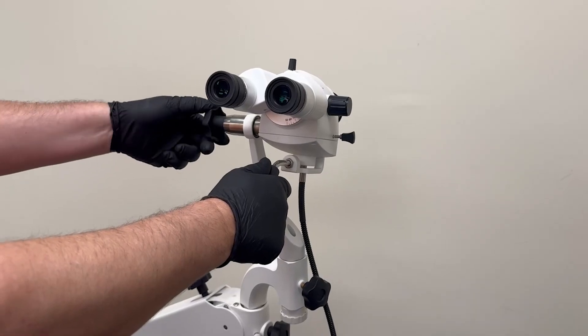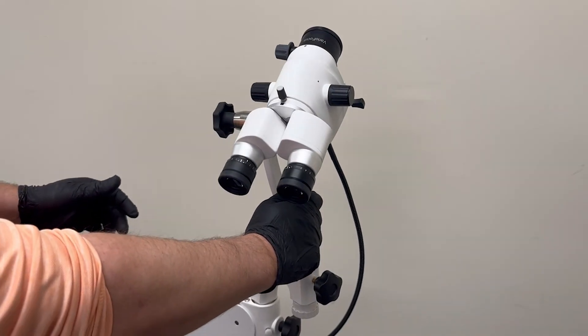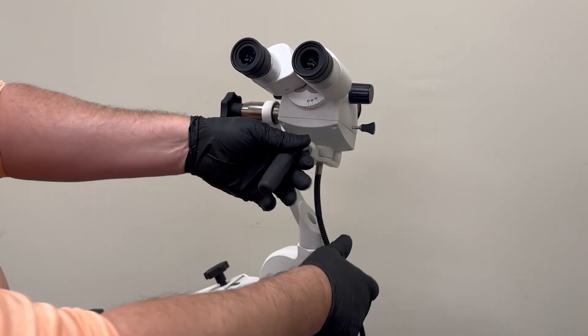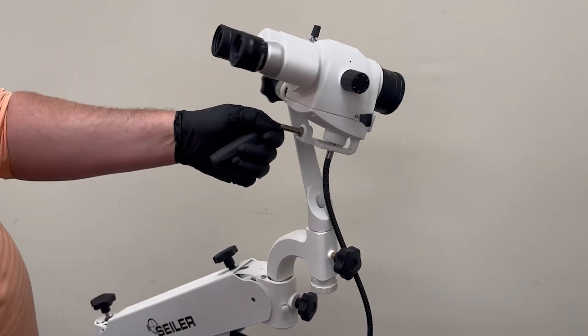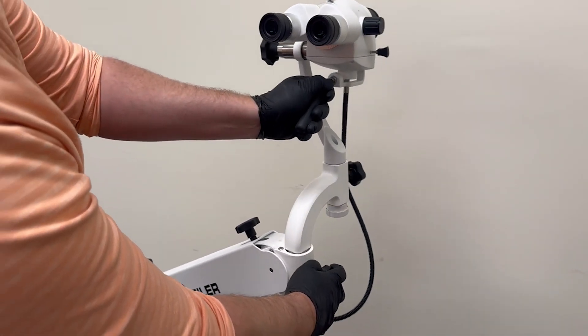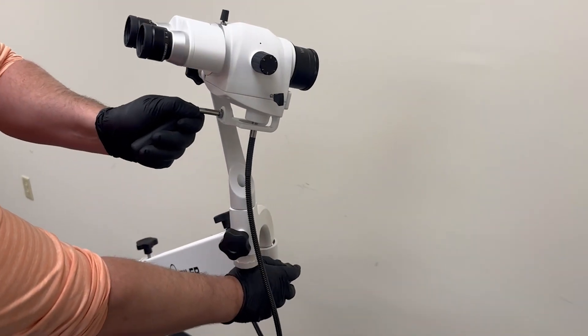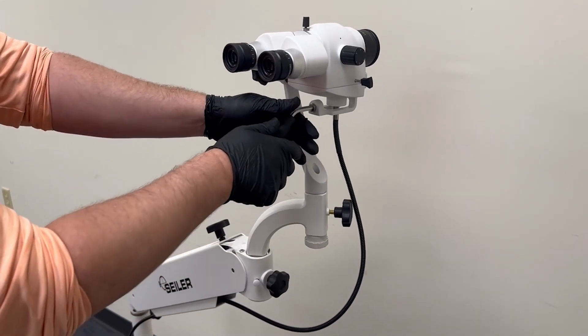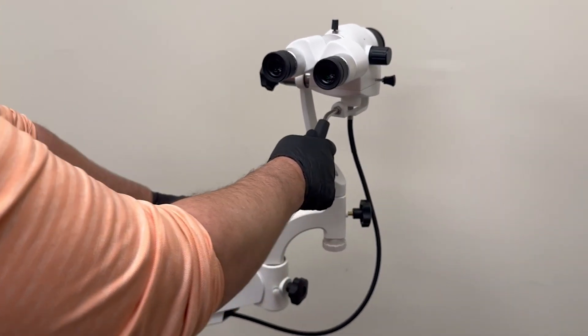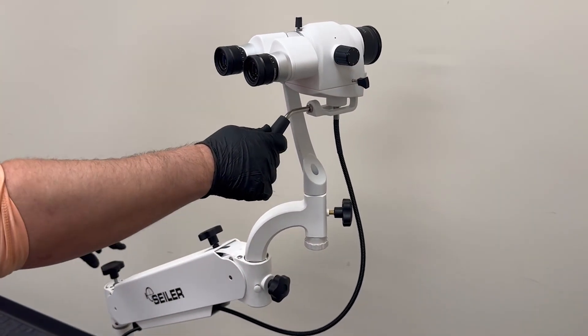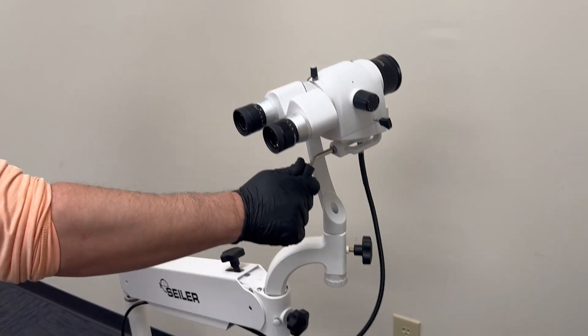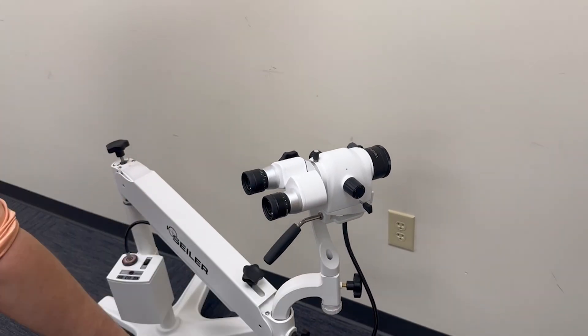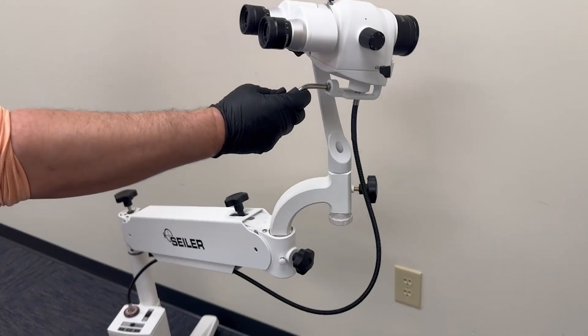The 955 Siler Colposcope is renowned for offering the best movement and articulation available in the medical industry today. Its design places each control knob strategically on the Colposcope body, allowing doctors to adjust and maneuver the device smoothly to their exact preferences. Siler uses a gas piston within its pantographic arm, which enables effortless vertical adjustments by a single finger.